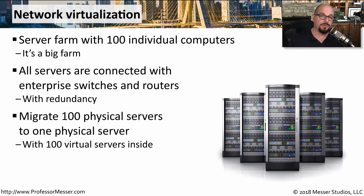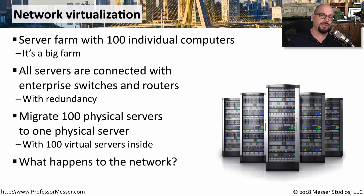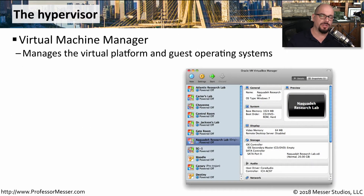We removed those 100 physical devices and created them all virtually within one single large physical system. So now that all of these servers are living in this virtual world, how do we provide switching and routing services for all of those networks and all of those VLANs? All of those hundreds of servers that are now virtualized will still need to be able to communicate to the physical world. The component that provides this link between the virtual world and the physical world is the hypervisor.